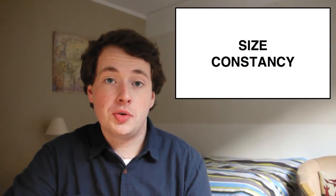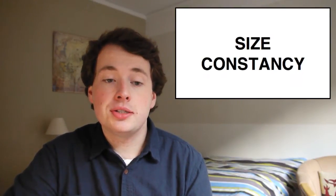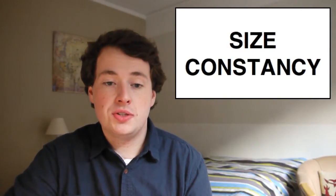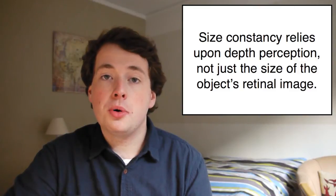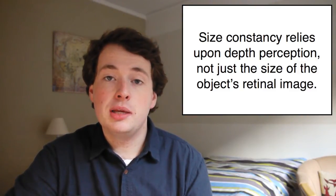The visual system cannot directly perceive size. In order to maintain size constancy, the brain scales up the size of the retinal image of an object in proportion to its perceived distance away from the observer. This means that the brain's perception of size is reliant upon its interpretation of the distances within a scene, not just the size of the retinal image of an object.